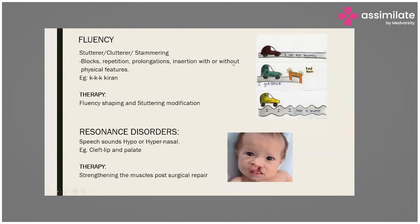Physical features, in the sense, are visible signs you can observe. There are many individuals who have these physical features coming up; in some patients there are no physical features. These kinds of repetitions and blocks are usually present in fluency, and we use fluency shaping techniques or stuttering modification techniques.